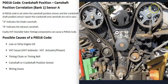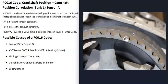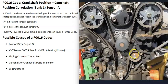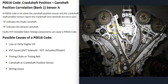Another possible cause is a bad timing chain or timing belt. These components have timing marks that all need to line up correctly. If the timing belt or chain slips on bank one, on camshaft A, even slightly before or after the timing mark, it can throw everything off. Timing belts and chains can also become stretched over time, or a tensioner can go bad, causing the timing to shift just enough to trigger these codes.